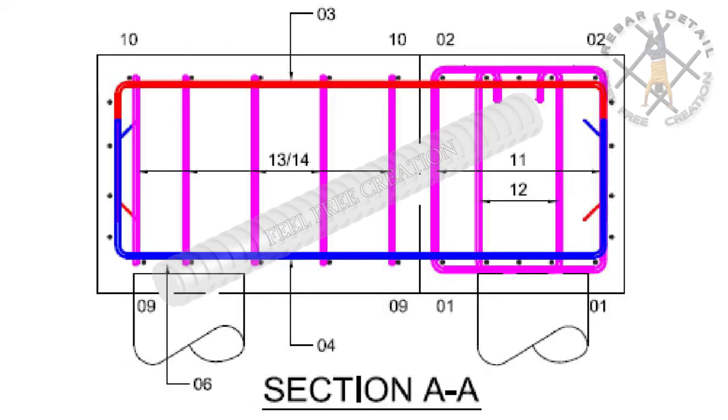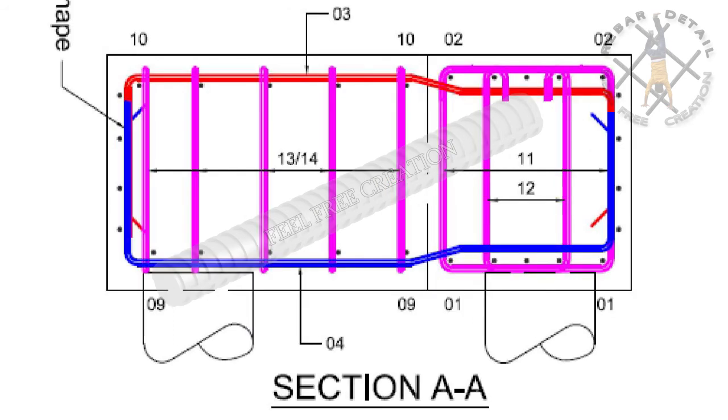If lap is not achieved within the pile cap width, as shown in section AA, then we go to alternate methods as shown here.